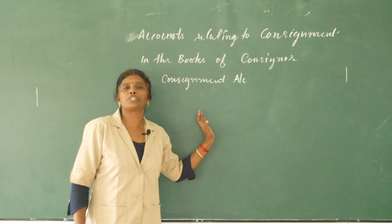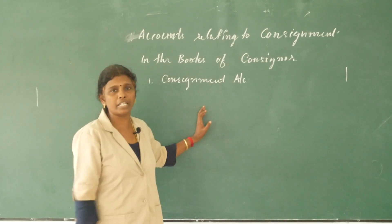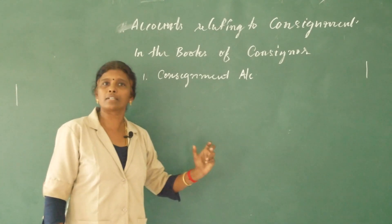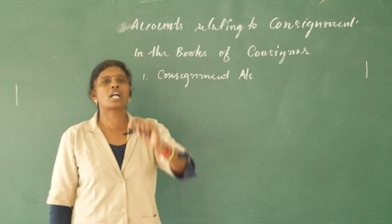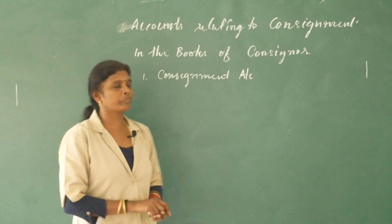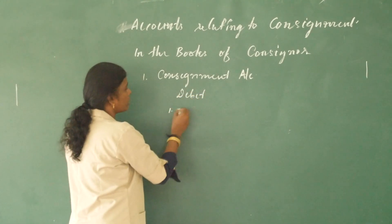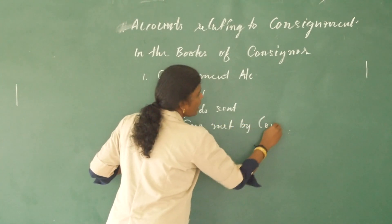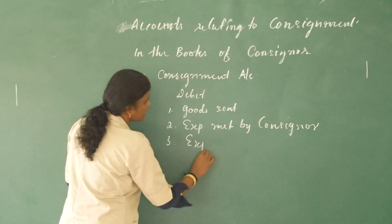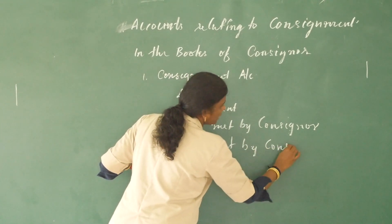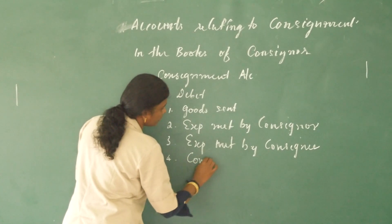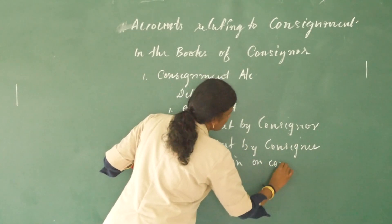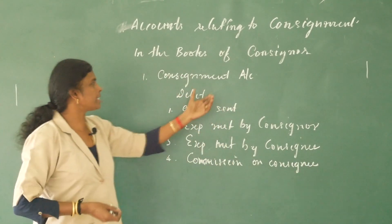On the debit side: first, goods sent to the consignment. Second, expenses met by the consigner. Third, expenses met by the consignee. Fourth, commission on consignment — that means commission to consignee. These are the items debited in this account.